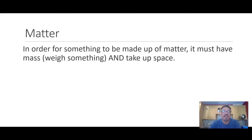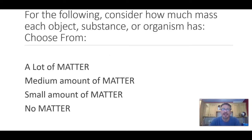Let's review the definition of matter again. In order for something to be made of matter, it must have mass — so it must weigh something — and it must take up space. Both of those things have to be true. So we're going to have a little activity. We're going to look at some objects, substances, and organisms, and you're going to decide whether the thing is made of a lot of matter, a medium amount, a small amount, or no matter.